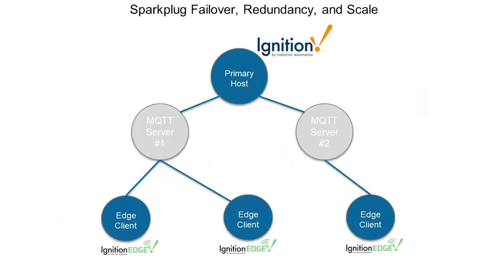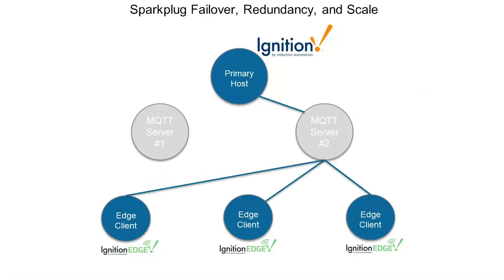Looking at Sparkplug's definition of failover, redundancy, and scale — in an operational system, we need one application issuing commands as the primary host. In this architecture, Ignition is the primary host with two available MQTT servers and three edge clients connected. If we lose our network connection from the primary host to MQTT server one, we want to tell those field clients that the primary application is no longer connected to that server, so they disconnect and connect to another available MQTT server in the infrastructure that is connected to our Ignition gateway.